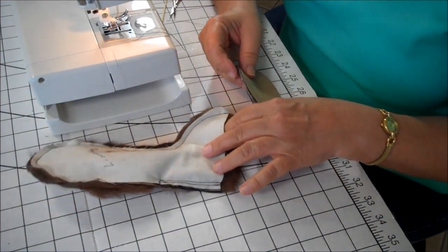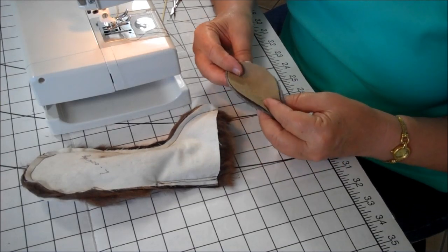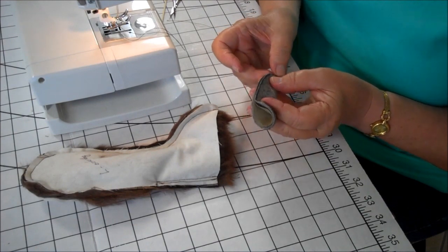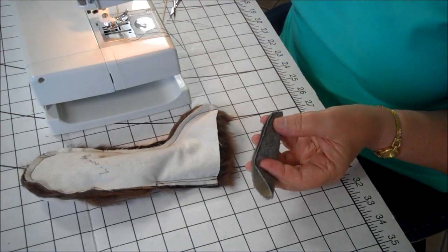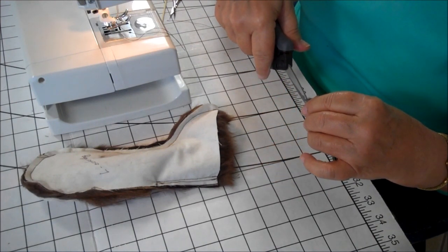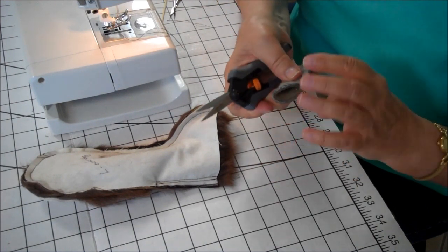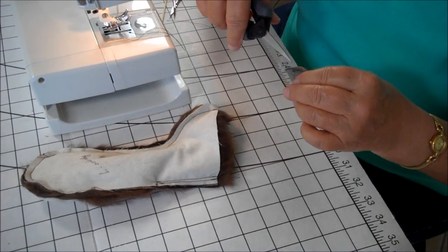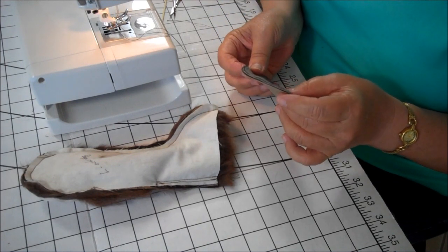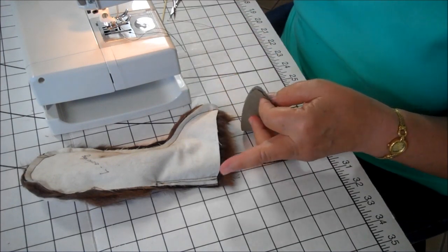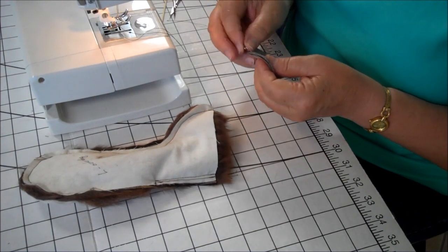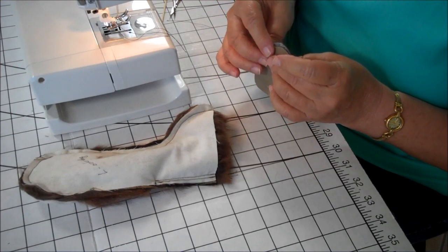I'm going to stitch it on. What you have to do is mark the center of the front and the back foot pad. What I do is put a little notch in here and here. You're going to match these notches up to the seams so that the material is evenly distributed around the foot.